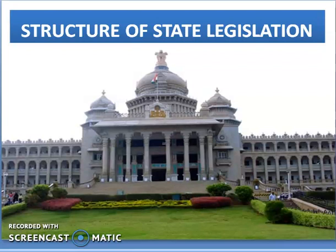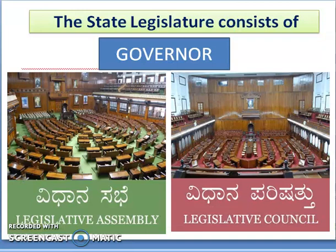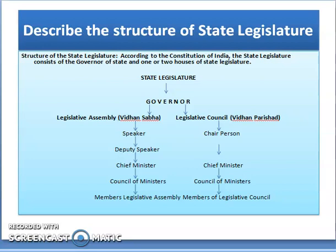Now let us discuss the structure of the State Legislature. The State Legislature consists of the Governor, Legislative Assembly, and Legislative Council. The Governor is the Constitutional Head of the State Legislature. The hierarchy for the Legislative Assembly or Vidhan Sabha is: Speaker, Deputy Speaker, Chief Minister, Council of Ministers, and members of Legislative Assembly. The hierarchy for the Legislative Council or Vidhan Parishat is: Chairperson, Chief Minister, Council of Ministers, and members of Legislative Council.